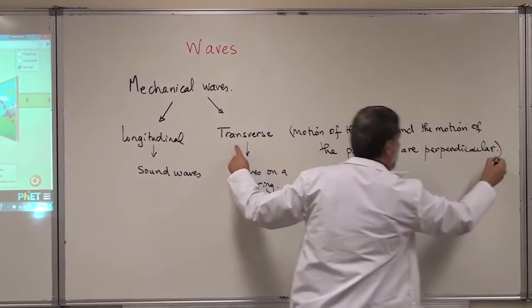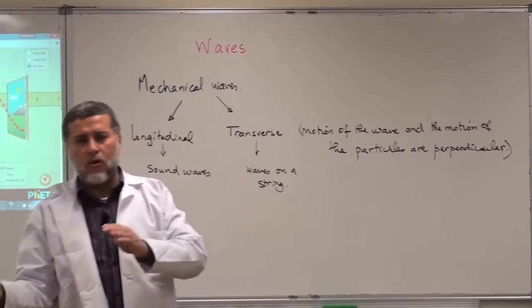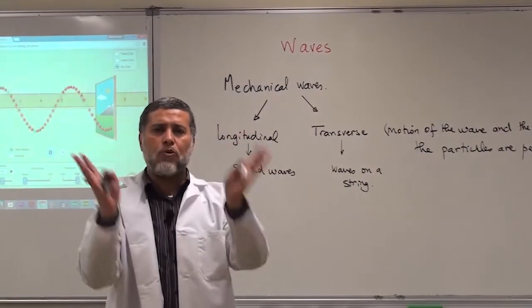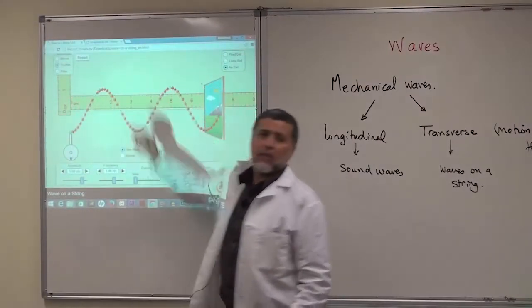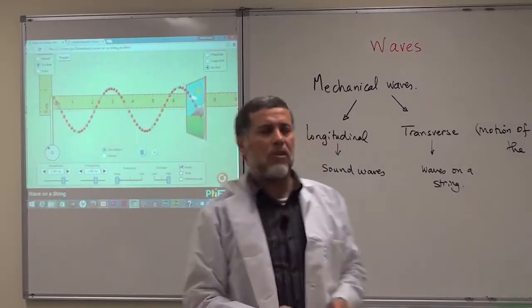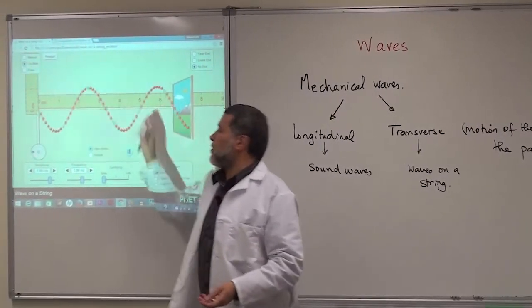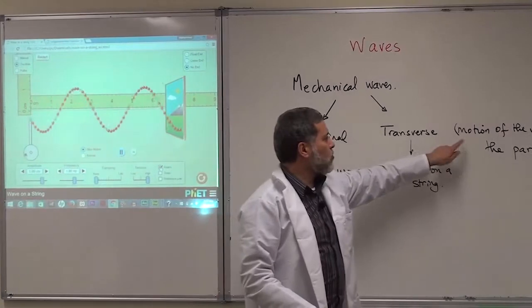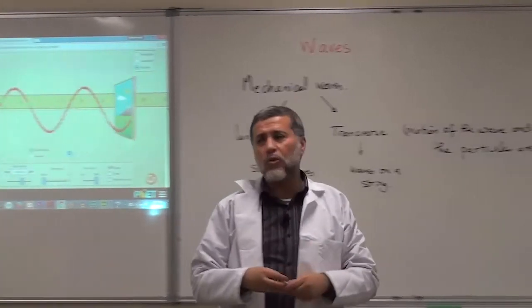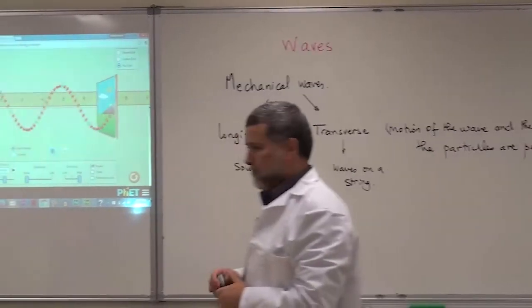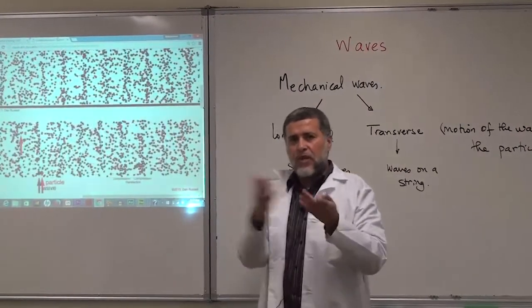To know whether we have a transverse or longitudinal wave, we look at two motions: the motion of the wave and the motion of the particles making the medium. When these two motions are perpendicular, we call it a transverse wave. Now I'm going to show you longitudinal waves so you can see the difference between the two.